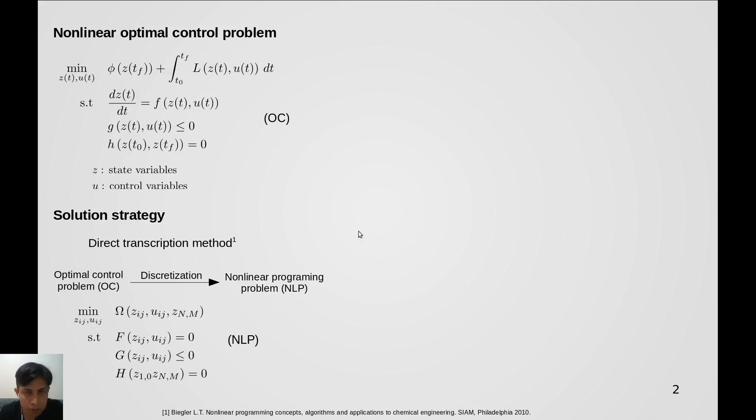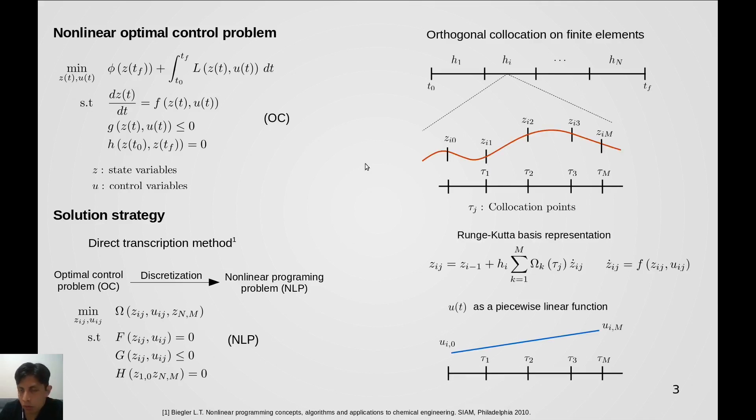We do this with a discretization scheme. I'm using orthogonal collocation on finite elements and the idea is to divide the time into several finite elements and within each one we are going to place some collocation points that we are going to use to represent these state variables. We use a Runge-Kutta basis representation for the state equations and piecewise continuous functions for the control variables.